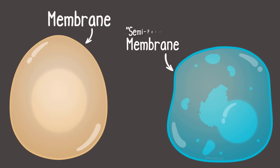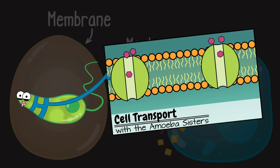The cell membrane is semi-permeable, meaning it lets some materials through but not others. We have an entire video all about cell transport and how materials can pass through the membrane.